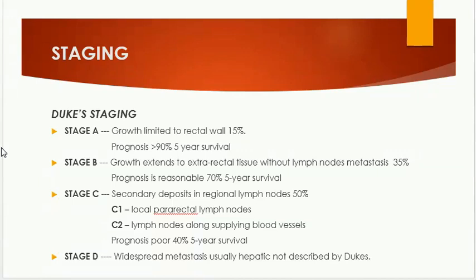Stage D is a modification (not original to Duke): distant metastasis to liver, lung, or any other site. This was added as a clinical staging modification because Duke, as a pathologist, never received specimens with distant metastasis. As for the TNM staging system, T describes tumor depth: TIS (carcinoma in situ), T1 (invades submucosa), T2 (invades muscularis propria), T3 (invades through muscularis propria into pericolorectal tissue), T4A (penetrates visceral peritoneum), and T4B (invades surrounding organs or structures).